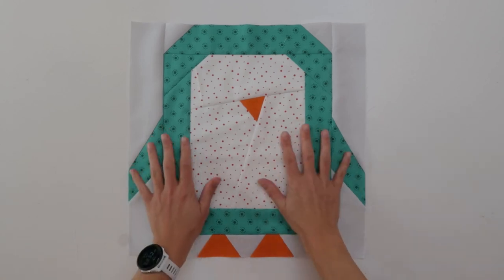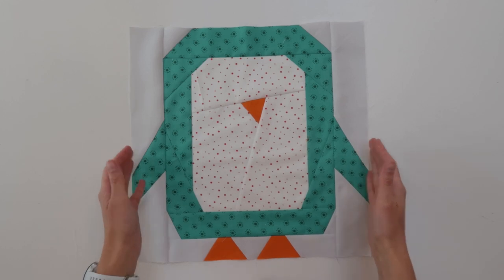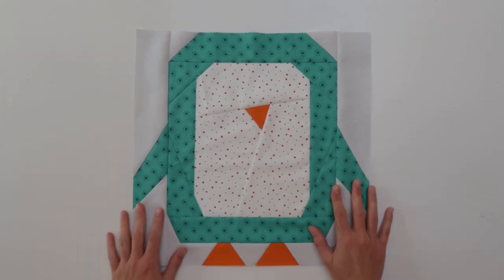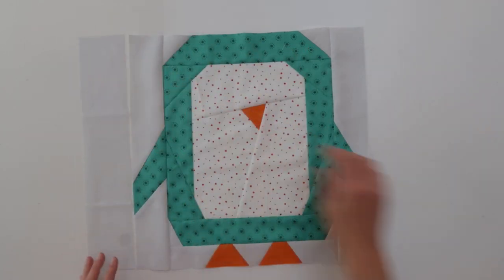The first thing we're going to do is make this block a little bit bigger. It now is 15 inches finished size and we want to make that 20 inches, so we're going to add two strips to the sides.